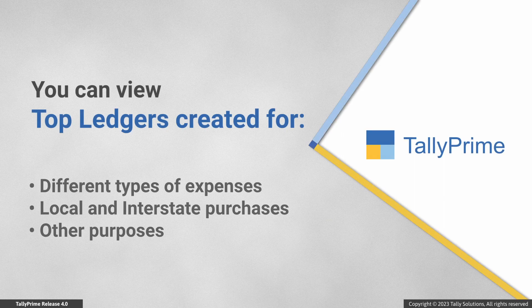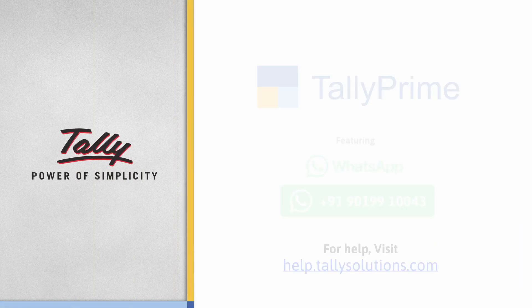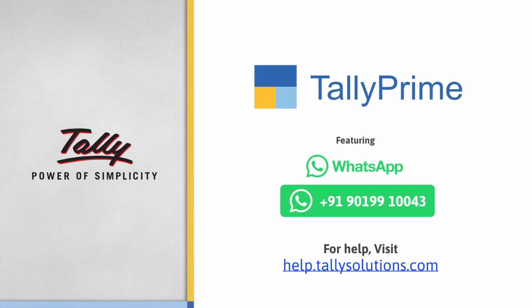Similarly, you might have created ledgers under Expenses for different types of expenses, or ledgers for different purchases such as local and interstate purchases. You can easily add the Top Group/Ledger tile with the required group and thereafter view the top ledgers with their values. Thank you.